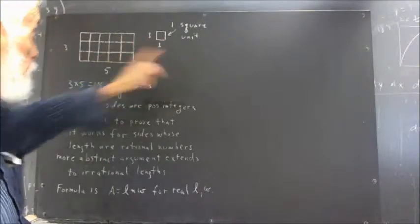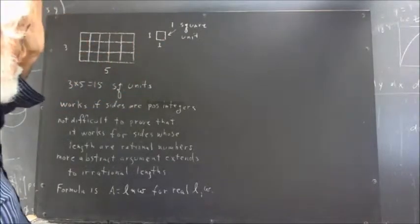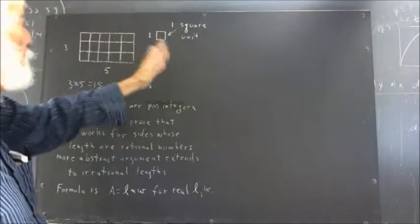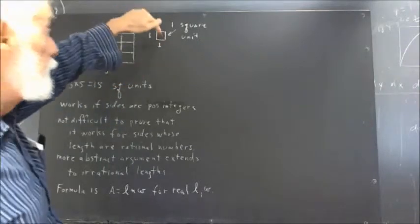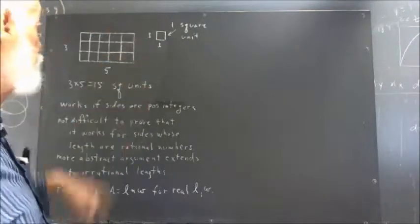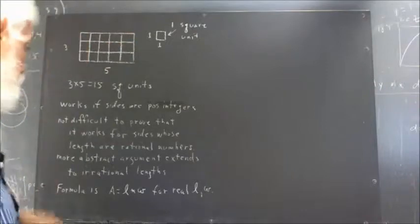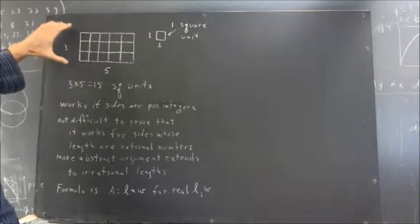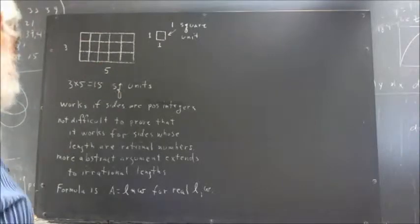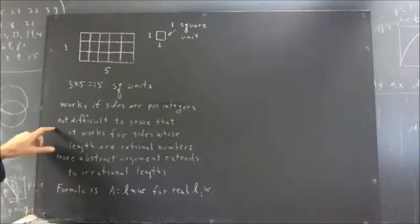If these are both positive integers, length and width, then clearly, we can divide the rectangle into units of one square each, and the number will be equal to the length of this side multiplied by the length of this side. It's not difficult, then, to prove that this also works if the lengths of the sides are rational numbers.